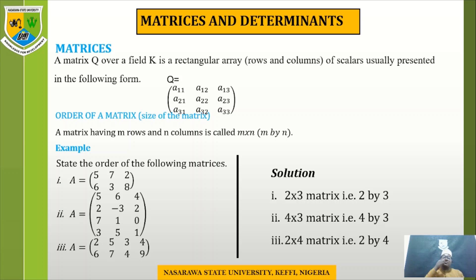Looking at an example of a matrix, the first element is indicated as A11 and the second element from the first row as A12. The third element is A13. From the second row we see A21, the second element A22, and the third element A23. From the last row, it is A31, A32, and A33.